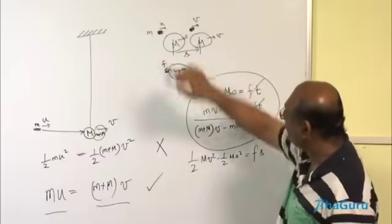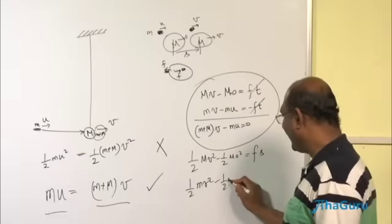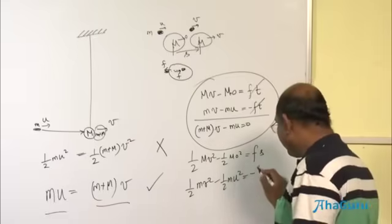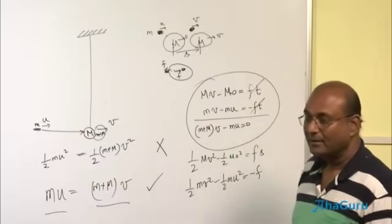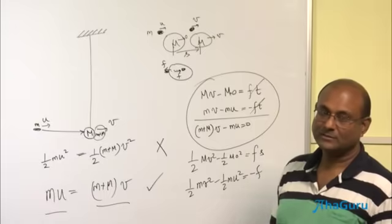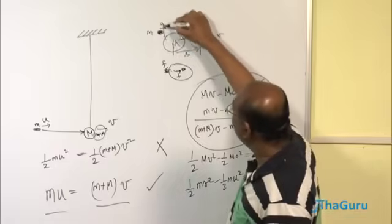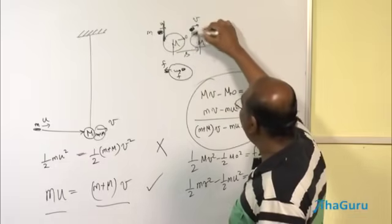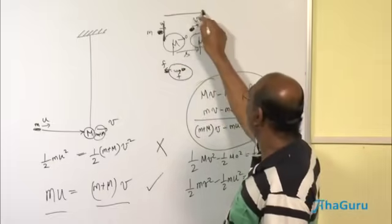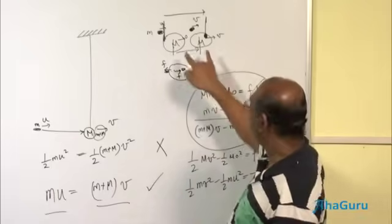If I write the same thing for that small m, it will be half m v square minus half m u square is the same f minus f. But it is not the same s. Why is it not the same s? Because if the bullet entered here, the bullet did not end here. The bullet ends somewhere there. So the bullet has moved much more distance than the sack.